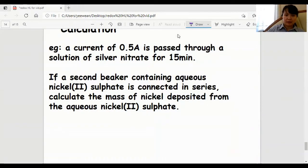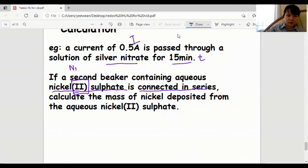Still the same question, but this time I'm adding a second beaker connected in series with the silver nitrate beaker, still the same current and time. In this second beaker, there is nickel sulfate. Nickel is not one to one with its electrons. The nickel equation is nickel two plus plus two electrons, so two Faradays are needed to deposit one mole of nickel.